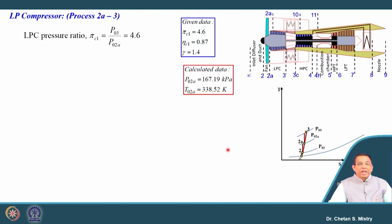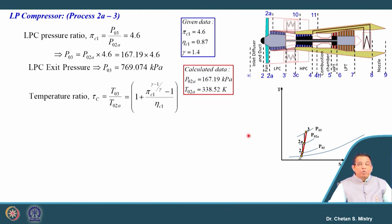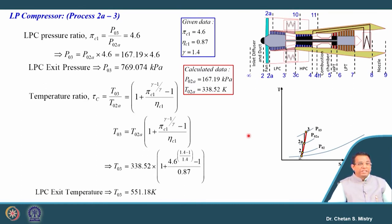The next component is the LP compressor, represented by process 2A to 3. LPC pressure ratio is 4.6 and efficiency is 87 percent. Exit pressure from the LP compressor is 769.07 kPa. Correlating temperature ratio with compression ratio and efficiency, the LPC exit temperature is 551.18 K. Be careful to use the correct pressure ratios for fan, LP compressor, and HP compressor as all three are different.